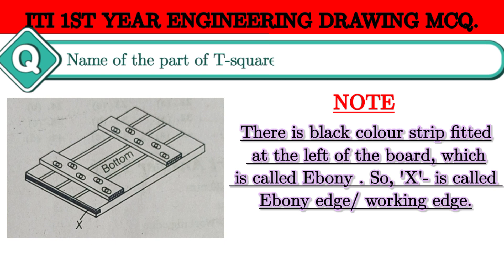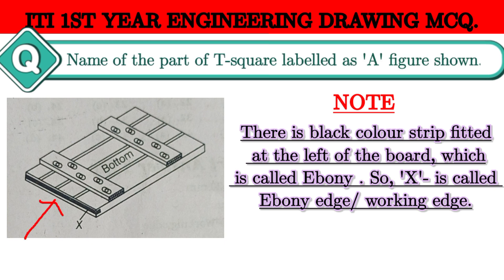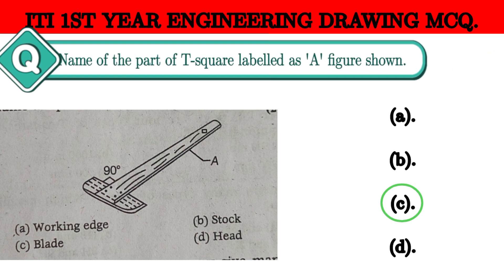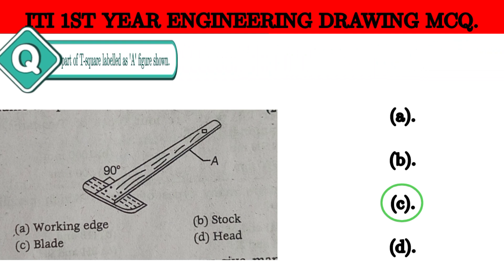This is a black color strip. What is this strip called? This is ebony. What is this strip called? This strip is called blade.